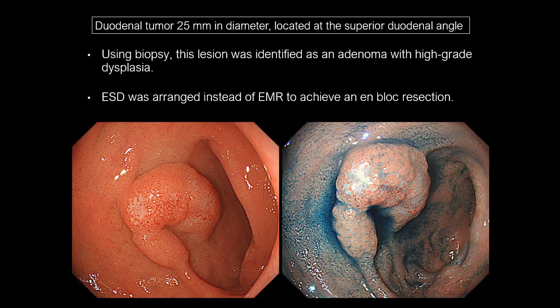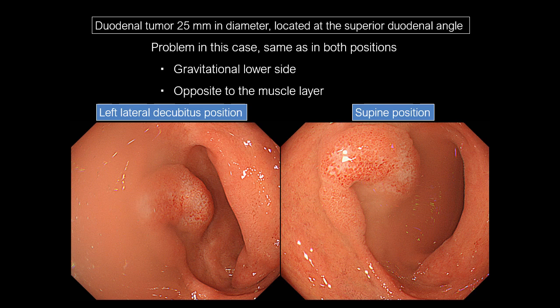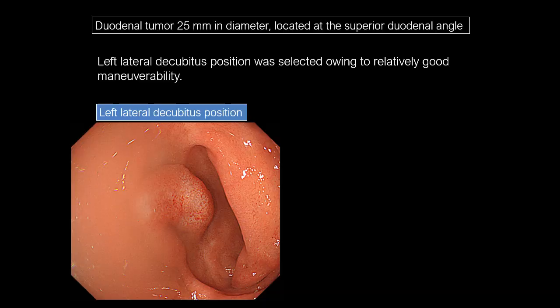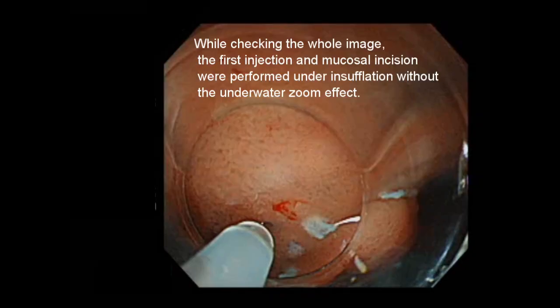For a medical check-up, a 55-year-old man underwent upper gastrointestinal endoscopy, which revealed a duodenal tumor 25mm in diameter at the superior duodenal angle. Using biopsy, this region was identified as an adenoma with high-grade dysplasia. ESD was arranged instead of EMR to achieve en bloc resection. The superior duodenal angle was often on the gravitational lower side; water collected around the region and the interface between air and water obstructed the visual field. Moreover, approaching the submucosal layer became difficult owing to the mucosal flap that hung down due to gravity. Thus, left lateral decubitus position was selected owing to relatively good maneuverability.